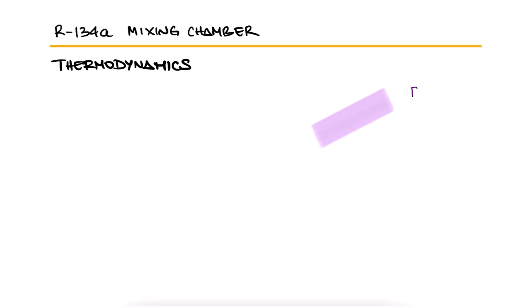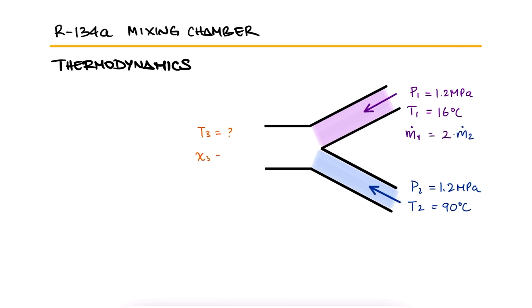A stream of refrigerant 134A at 1.2 MPa and 16 degrees Celsius is mixed with another stream at 1.2 MPa and 90 degrees Celsius. If the mass flow rate of the cold stream is twice that of the hot one, what is the temperature and the quality of the exit stream?